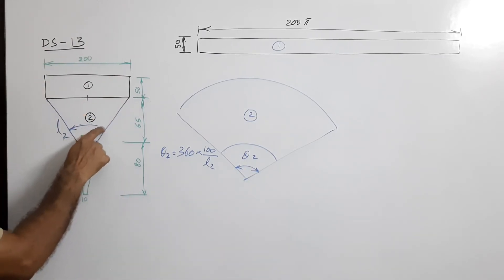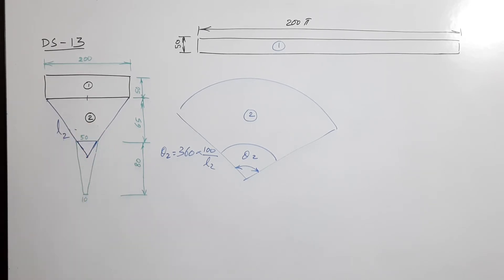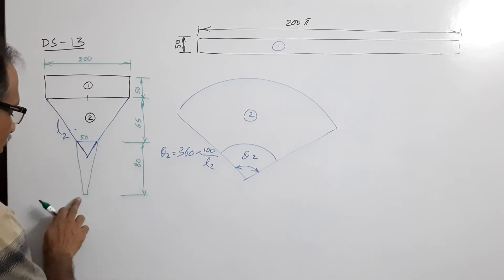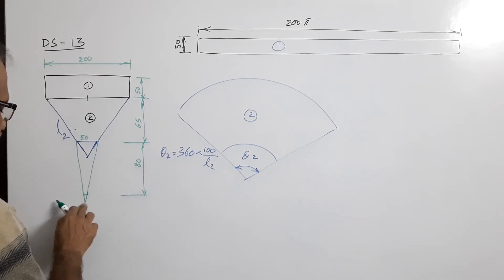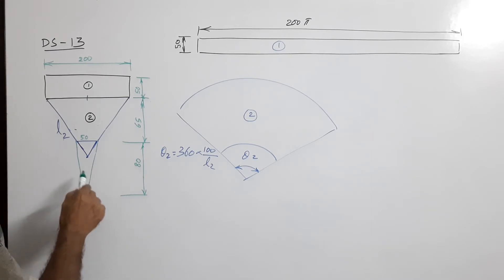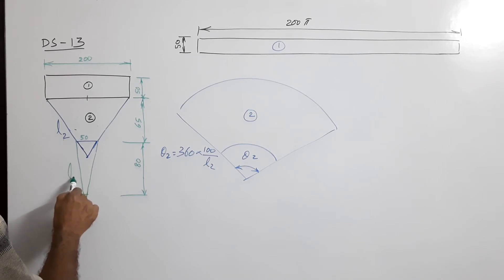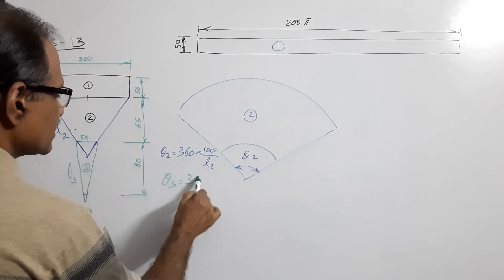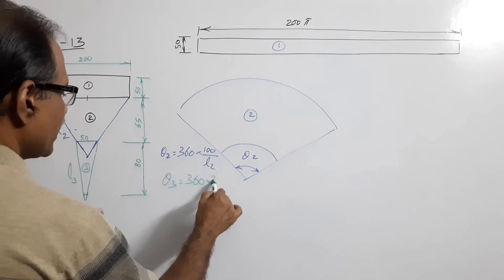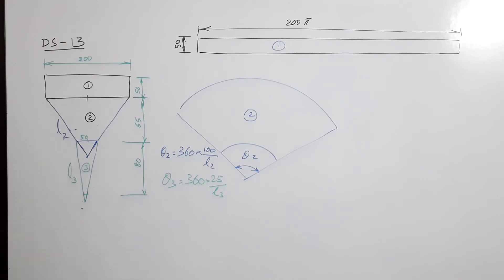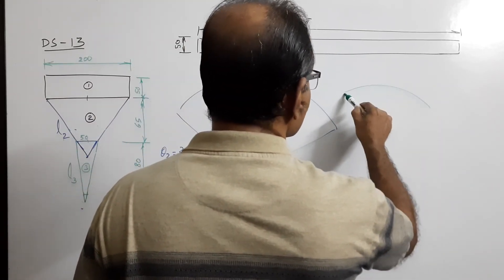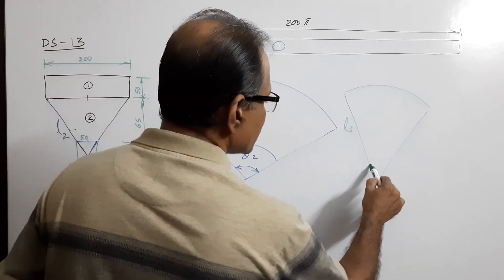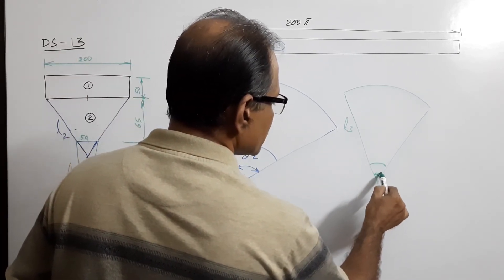Part 3 is again a frustum of a cone. Extend the sides to find the apex, then get the slant generator length l₃. The base radius for Part 3 is 25 mm. So θ₃ equals 360 multiplied by 25, divided by l₃. Get θ₃, then draw an arc of radius l₃ and a smaller arc at the inner radius.